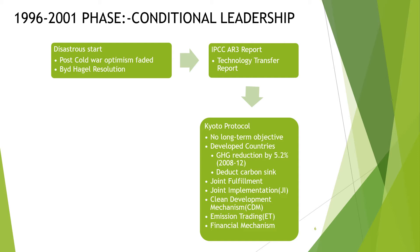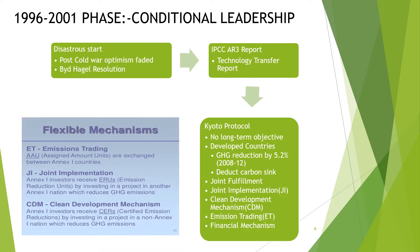Five mechanisms were discussed, but only three remain active today. Emission Trading: Annex 1 countries can exchange emissions between themselves. Joint Implementation: one Annex 1 country can have a project in another Annex 1 country and can take emission credits for that. Clean Development Mechanism: one Annex 1 country can invest in a non-Annex 1 country and can gain emission credits for that.